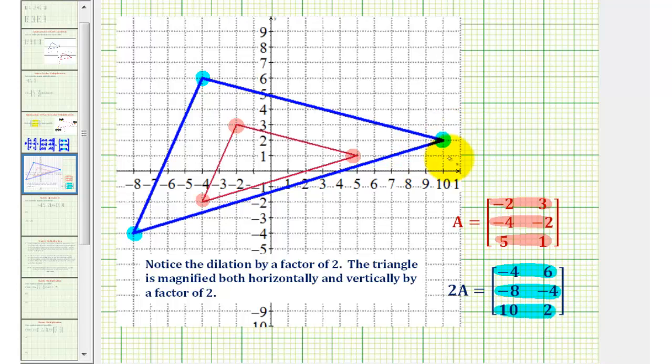The blue triangle is much larger. It's been dilated by a factor of 2, which means the triangle is magnified both horizontally and vertically by a factor of 2. The blue triangle is twice as large as the red triangle. Scalar multiplication is a way to perform a dilation of a polygon on the coordinate plane. I hope you found this explanation helpful.